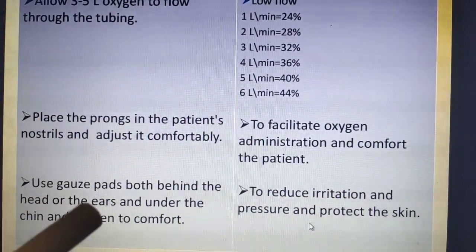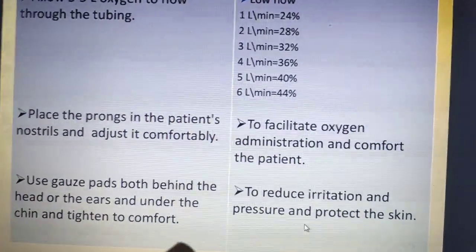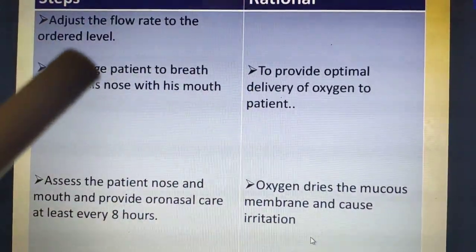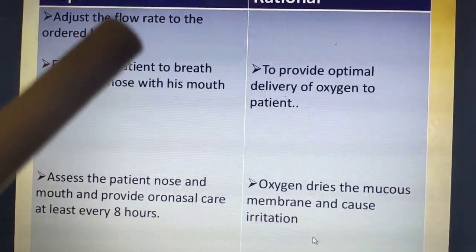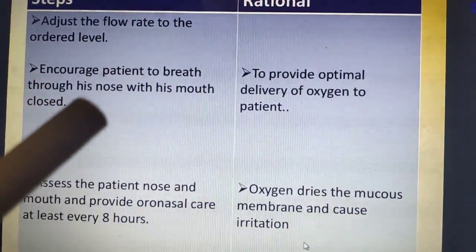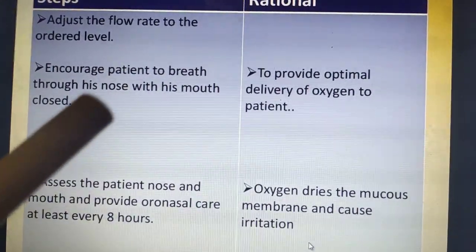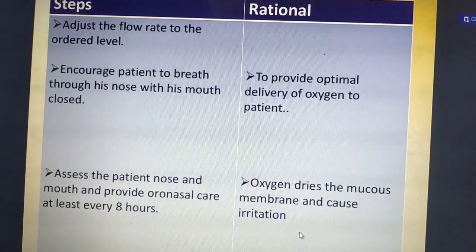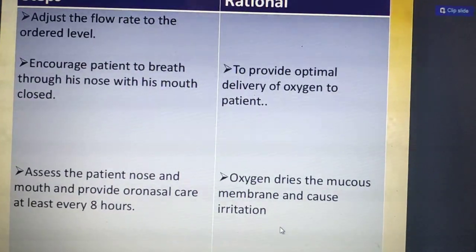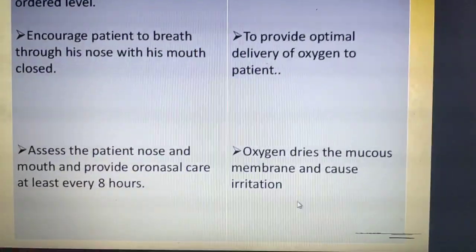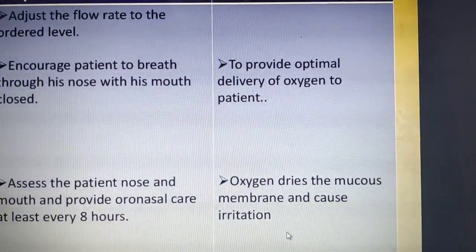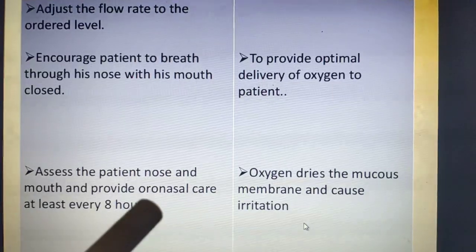Place the prongs in the patient's nostrils and adjust them comfortably to facilitate oxygen administration. Use gauze pads behind the ears and under the chin when tightening, to reduce irritation and protect the skin. Adjust the flow rate to the ordered level. Encourage the patient to breathe through the nose with mouth closed to provide optimal oxygen delivery. Assess the patient's nose and mouth and provide oronasal care at least every eight hours, since oxygen dries the mucosal membrane and causes irritation.